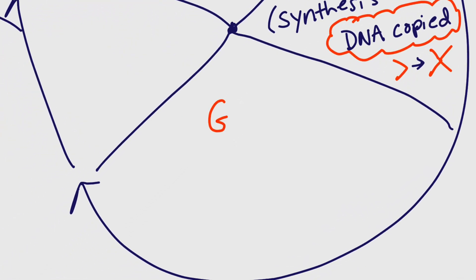And then we get to, if the signals are right, G2 or gap two. And we can just generally describe that as get ready to divide.